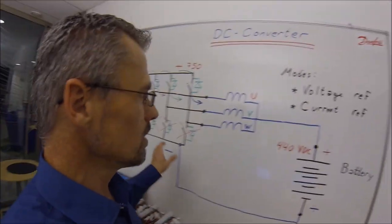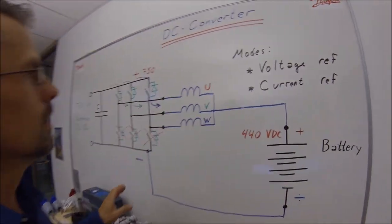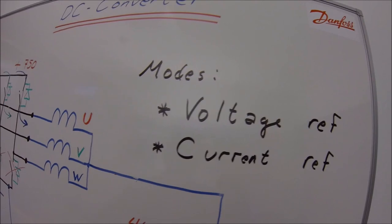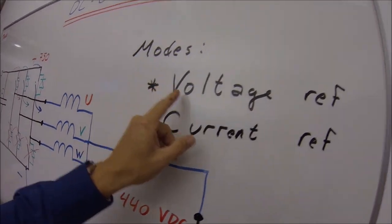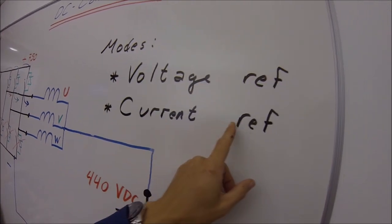Now that we have seen how the DC converter works, how to control it? You can control it in two modes. One is voltage reference mode and the other one is current reference mode.